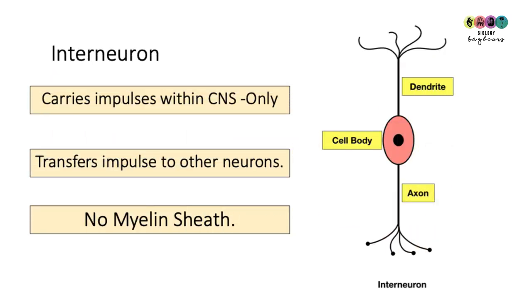The third type of neuron is the interneuron. It's found only in the central nervous system, where it carries impulses and generally transfers them from one neuron to the other. Note that there is no myelin sheath.